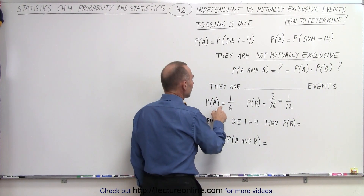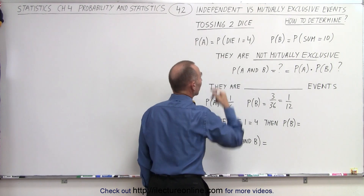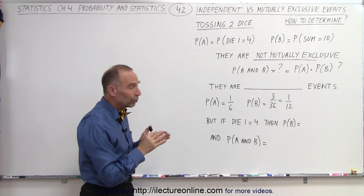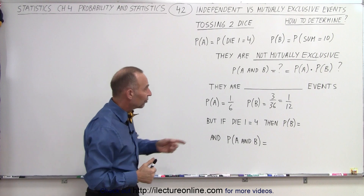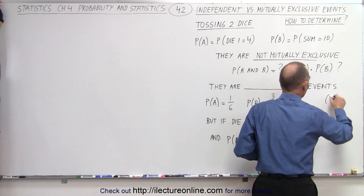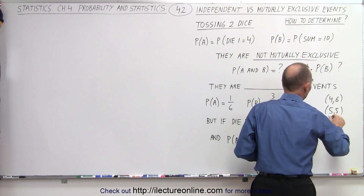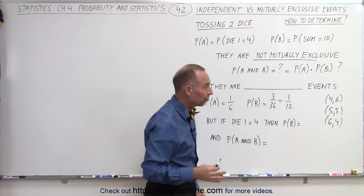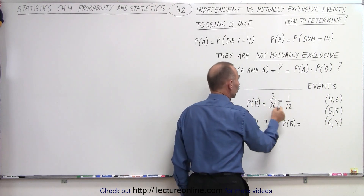The probability of A is equal to 1 out of 6, because there's only one chance in 6 that die 1 will equal a 4. The probability of B — that the sum of the two dice equals 10 — is 3 out of 36, because there are three different ways that can happen: a 4 and a 6, a 5 and a 5, and a 6 and a 4. That's 3 out of 36 possible combinations, which equals 1/12.